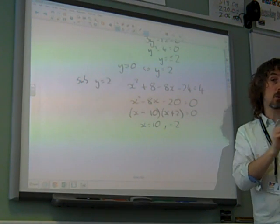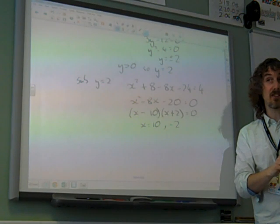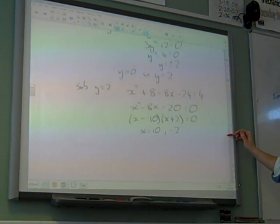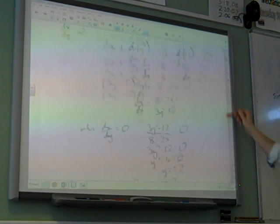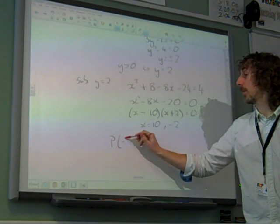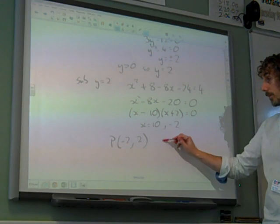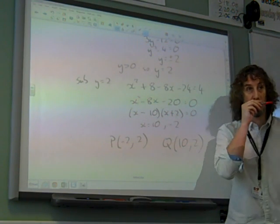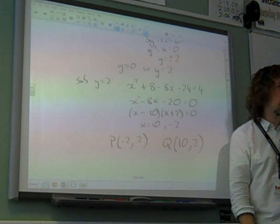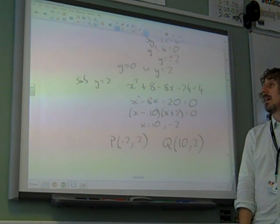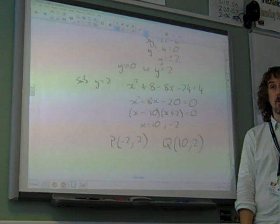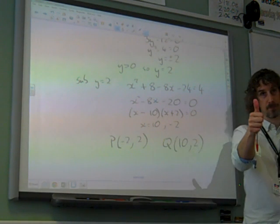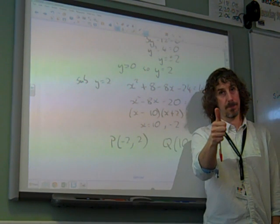And the question did say, find the coordinates. And actually we know which is which as well. So P is the one where x is negative. So P is the point minus 2, 2. And Q is the point where x is positive. So 10, 2. It was quite nice once you got through it, wasn't it? And you put the individual marks on that one. That's nice. That's what I've done.